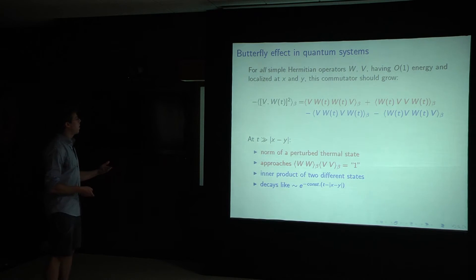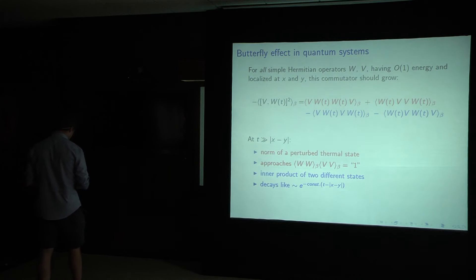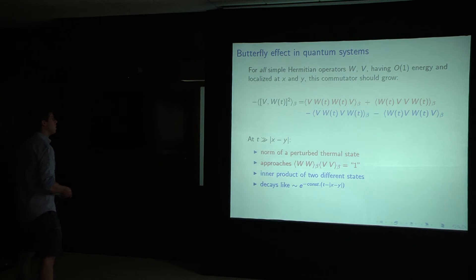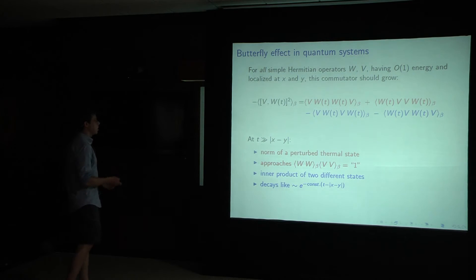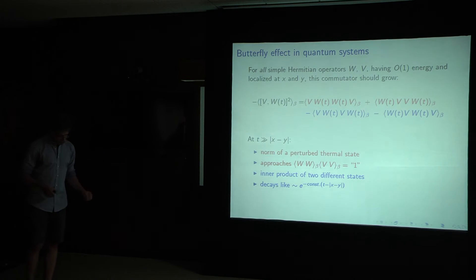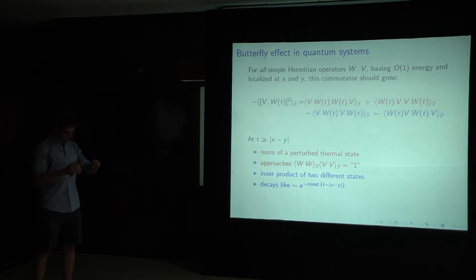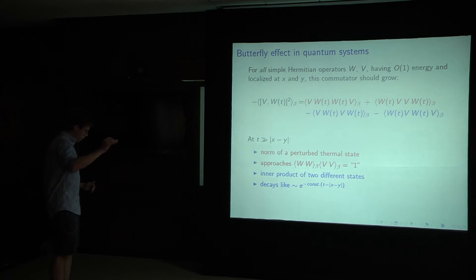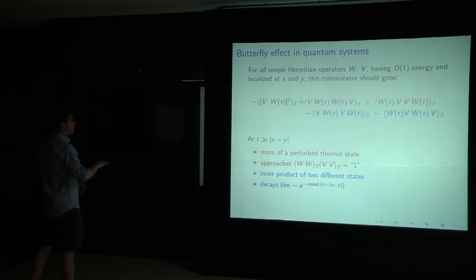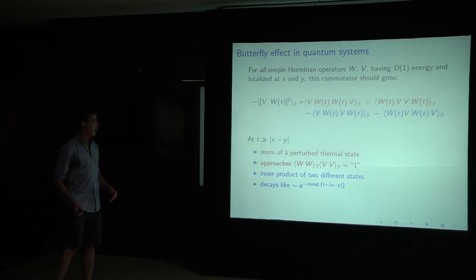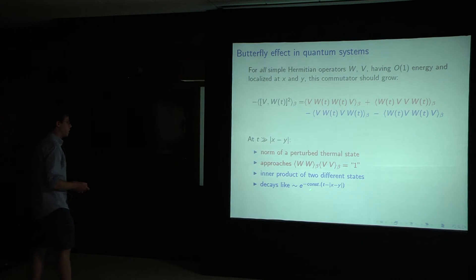If we think that, so let's think about what should happen. At early times, everything is space-like separated, so we're at liberty to move the operators around in the correlation functions. And so everything should just cancel. At late times, this W operator is growing out, and eventually it will reach V. And if this commutator, as I've argued, should increase, and these red terms should stay order one, then we need these blue terms to decay. In fact, the claim is that they're going to decay exponentially.